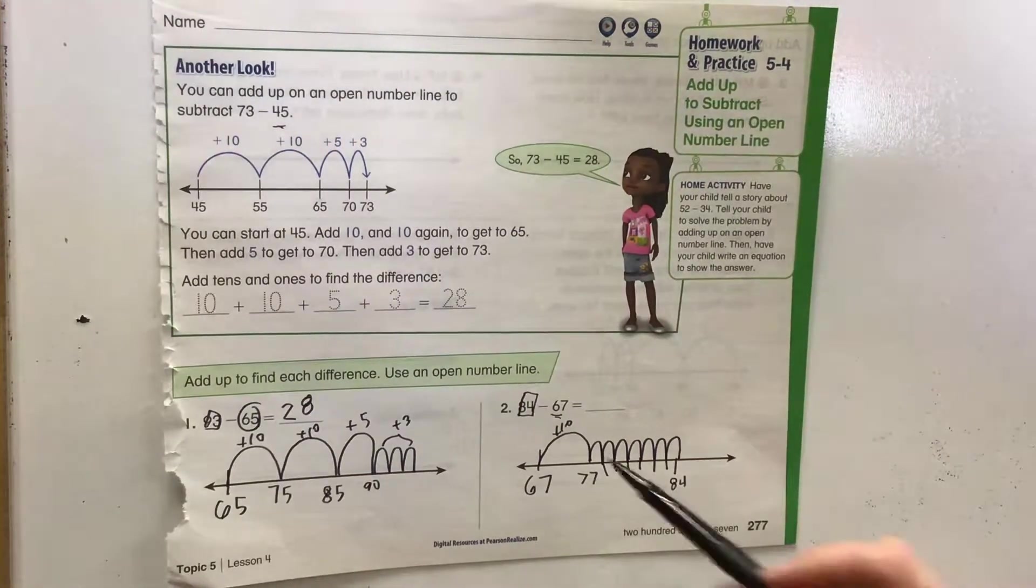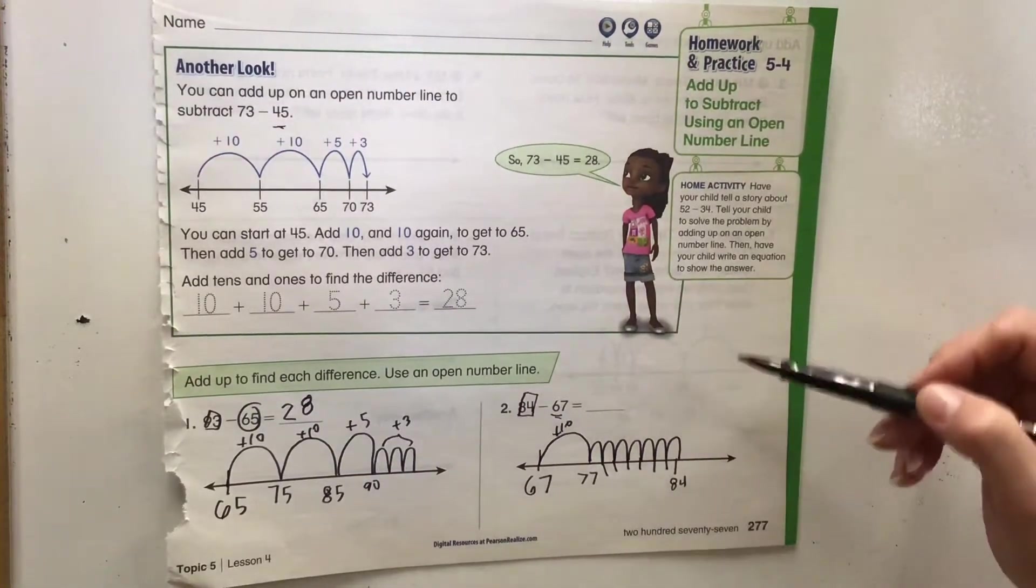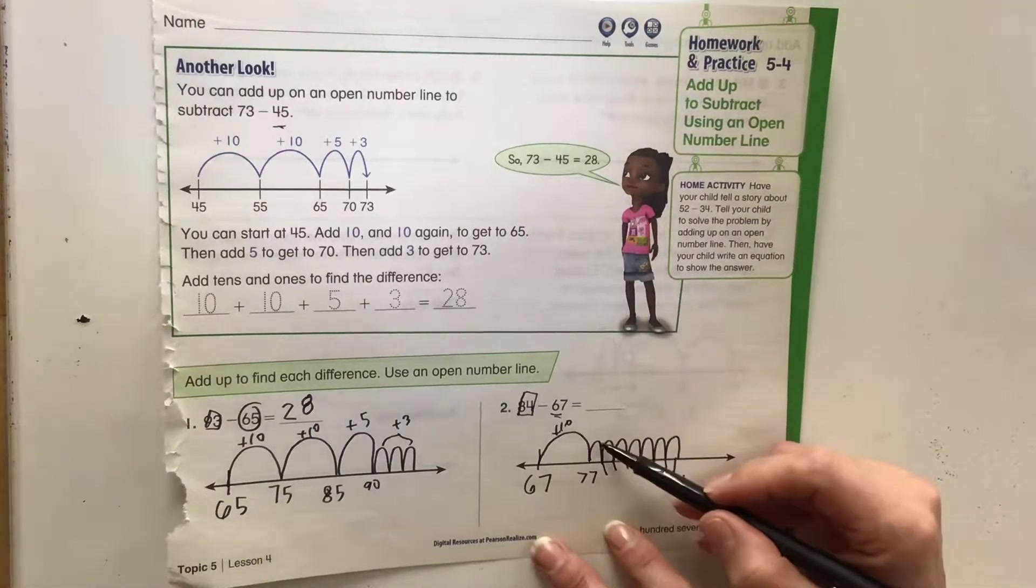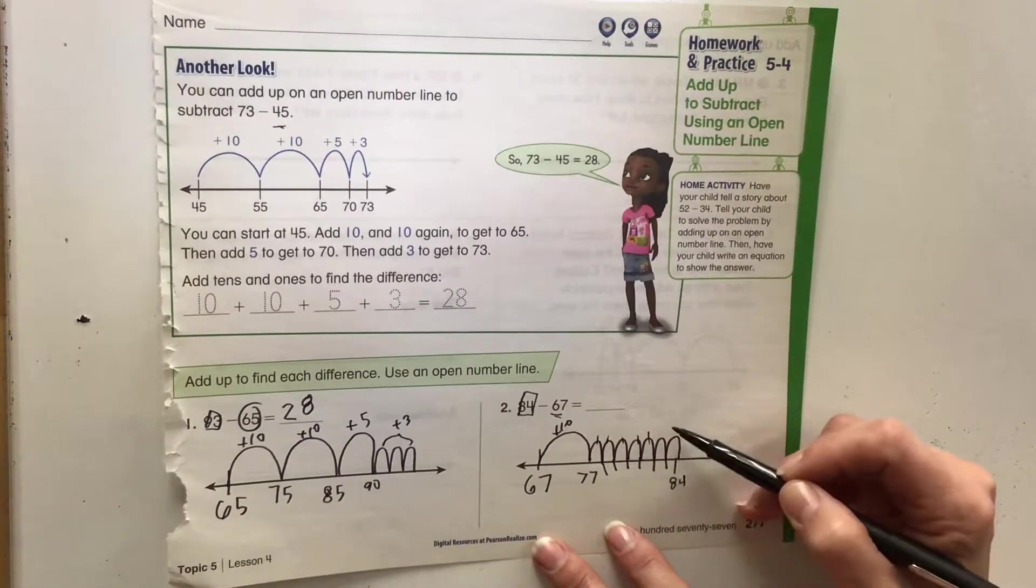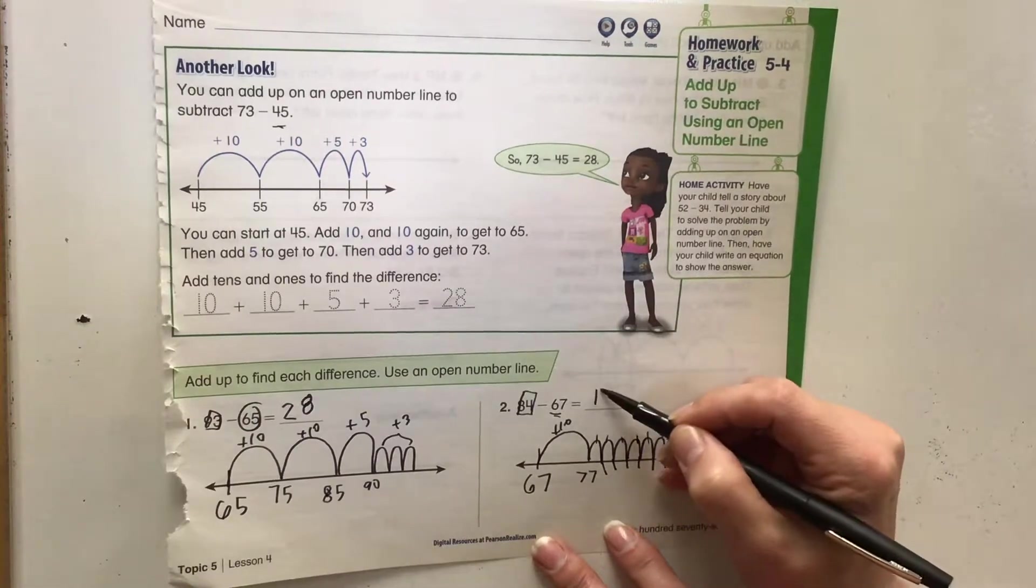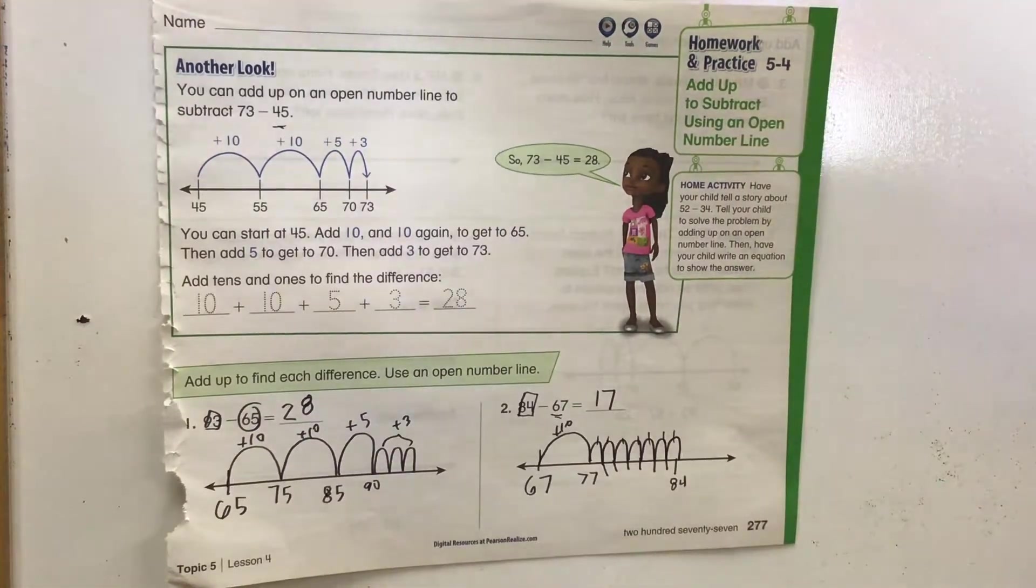So now what we need to do is take a look at how many hops we did because we're adding up. So we have 10, 11, 12, 13, 14, 15, 16, 17. We had to add 17 to get up to 84.